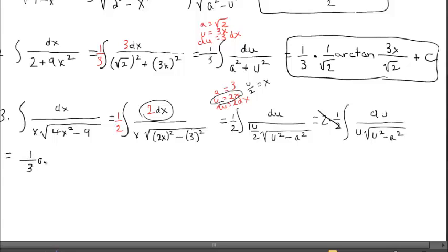Swinging back over here, these will cancel. I have exactly the formula I need. This is going to go back to 1 over a, which is one-third, arc secant, absolute value of u over a. That's 2x over 3.